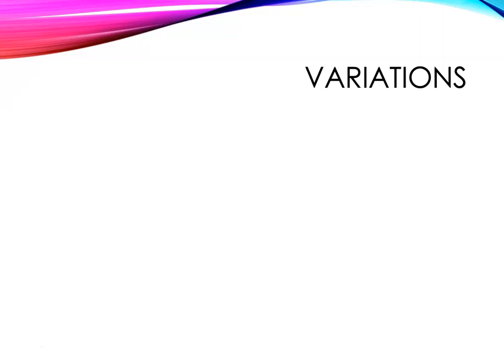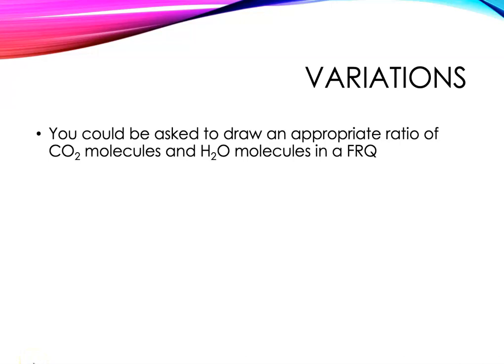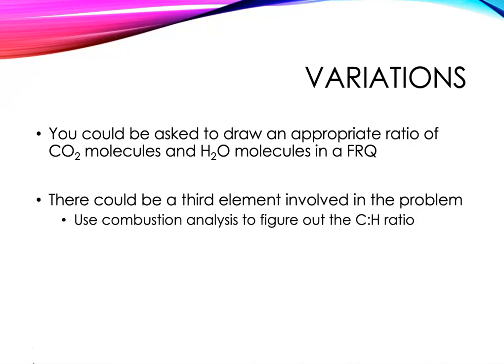As I was putting this webcast together, a couple of variations on these kinds of problems occur to me. One is that you could have a free response question where you're given the hydrocarbon and you're asked to draw an appropriate ratio of CO2 and H2O molecules, so you could draw your own diagram, your own particle level model. And you should expect somewhere in the AP exam that there will be at least one particle level model question that you'll be asked. Another variation is that you could have a third element involved in the problem, maybe nitrogen, maybe sulfur, could be oxygen, and so you can figure out the carbon to hydrogen ratio from the combustion analysis using the strategy we were using, and then figure out the correct answer from that and the rest of the information in the problem. So it could be a little more involved.